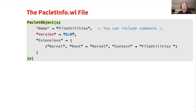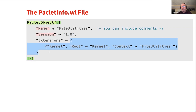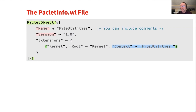Here's the extensions part — this is really the important part of a PACLIT. This is where a PACLIT describes the ways in which it extends the system. This PACLIT says it has a kernel extension, meaning it has some Wolfram language code. It says the context it provides is file utilities. So when a PACLIT like this is installed in the system and someone does needs file utilities, the PACLIT manager says it knows where that context is — it's in this PACLIT — and it knows how to find the file utilities.m file from within the PACLIT.